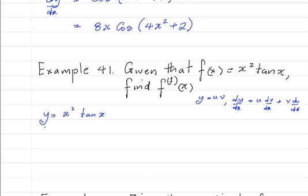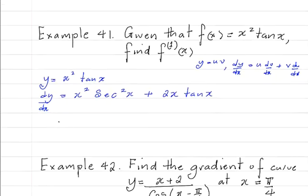So dy by dx would be: leave the first, x squared, differentiate the second — and when you differentiate tan, you get sec squared x. Plus differentiate the first, you get 2x, leave the second, which is tan x. So our answer is x squared sec squared x plus 2x tan x.